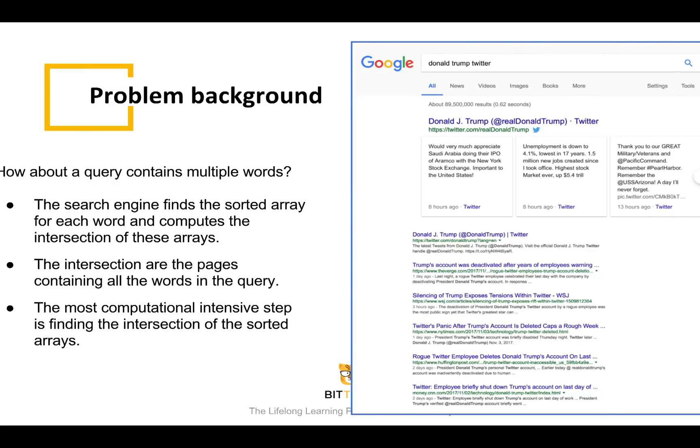For a single word or phrase, we know how it works in a search engine. How about a sentence? Say, a search query containing multiple words? A sentence is a list of words. Since we already have the inverted indices for the individual words, the search engine will first find the sorted array for each word and then computes the intersection of these arrays.